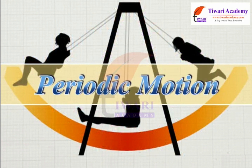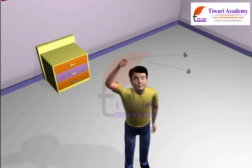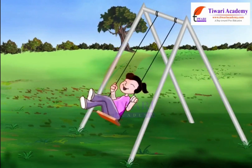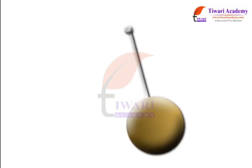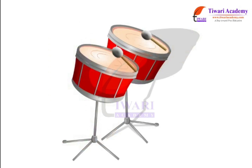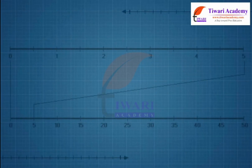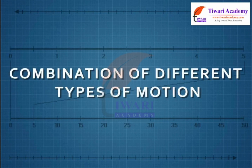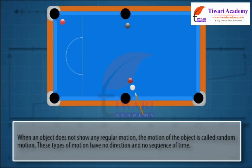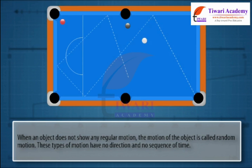Periodic motion is the type of motion in which the object repeats its motion after a fixed interval of time. Examples include the motion of a child on a swing, motion of a pendulum, strings of a guitar, and the surface of drums when being played. When an object does not show any regular motion, it is called random motion. Random motion has no fixed direction and no sequence of time.